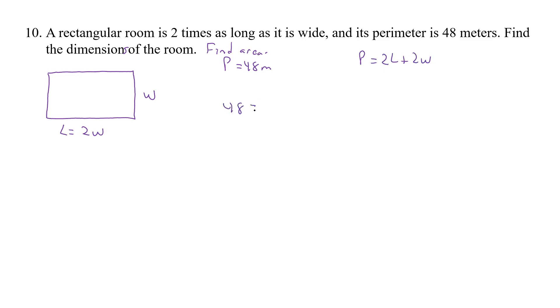So 48 equals two times W is 2W, plus 2 times this is going to be that. Now we have 2W plus 2 times 2W. So that's 48 equals 2W plus 4W. So that's 6W.